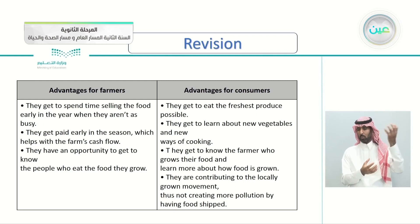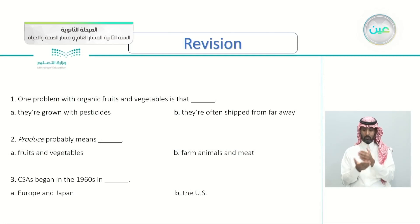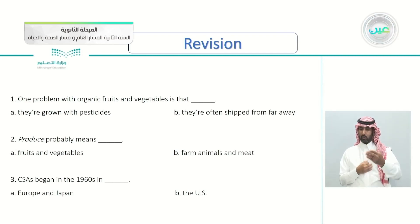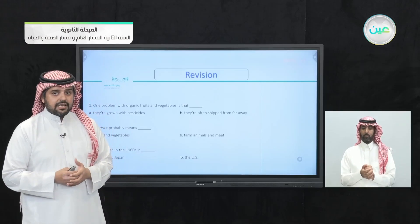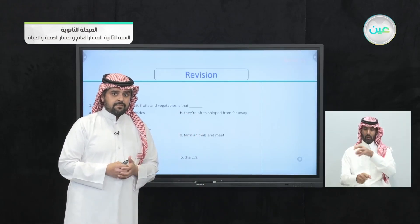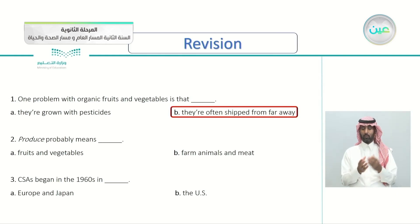Question one: one problem with organic fruits and vegetables is that A, they're grown with pesticides, or B, they're often shipped from far away. What was the problem mentioned about organic food in the article? That's correct — B, they're often shipped from far away, which contributes to air pollution.